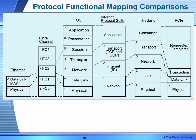Here we're looking at the mapping between various technologies. We see Ethernet on the left and how that maps into a Fibre Channel stack. We looked at the OSI in the previous module. We also have the Internet Protocol Suite, InfiniBand, and at the far right, the three-layer PCI Express stack. Sitting at the top is the requester-completer model, which is the application layer. The requester and completer communicate using the transaction, data link, and physical layers. The physical maps straightforwardly; the data link maps to the link layer; and the transaction layer maps between the network and transport — session, transport, and network layers inside the OSI model.